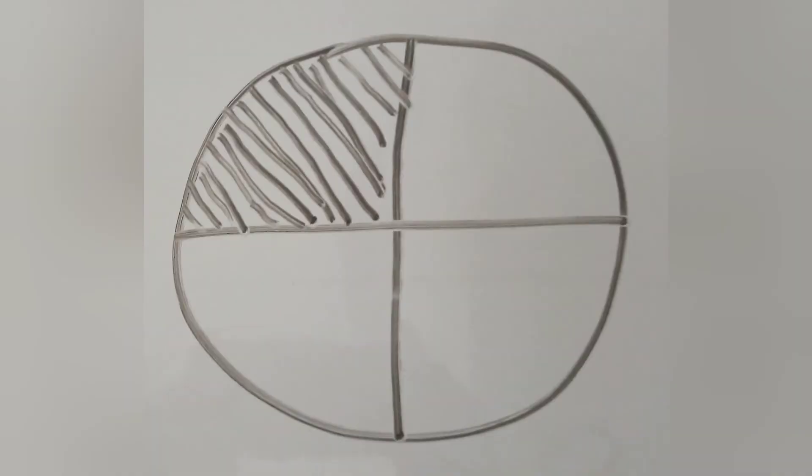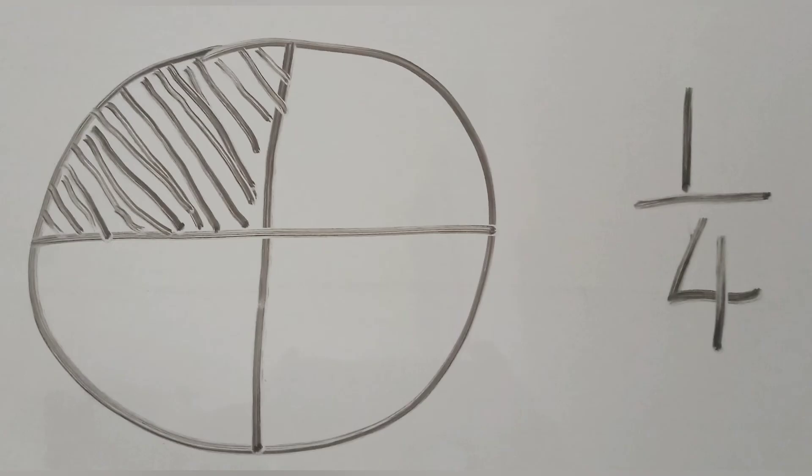And the second one is a circle. The circle is divided into 4 equal parts. Again, 1 part is shaded. So, the fraction of the circle that is shaded is 1 quarter.